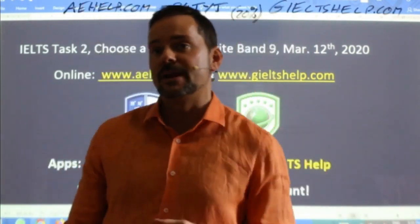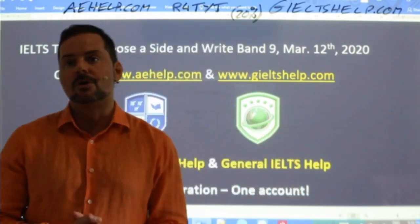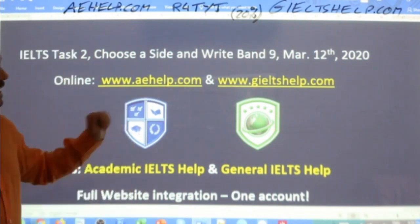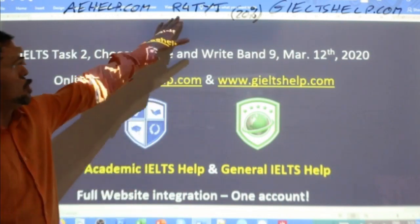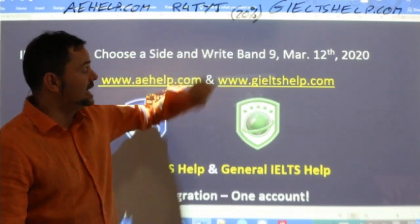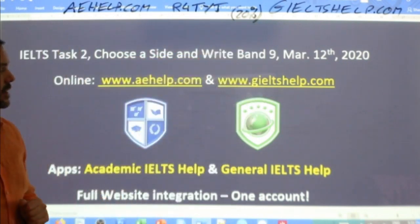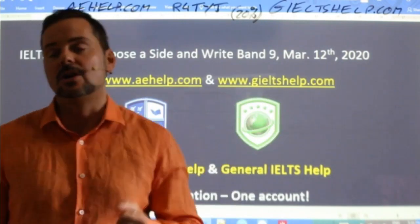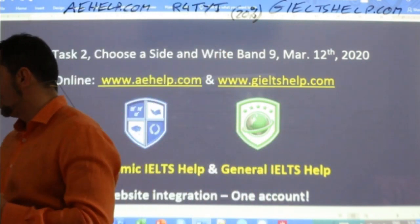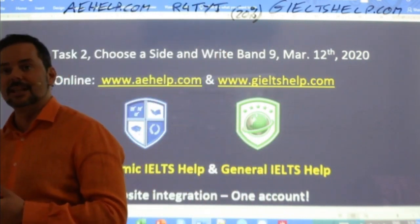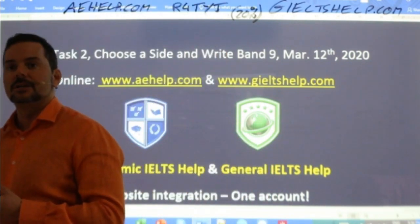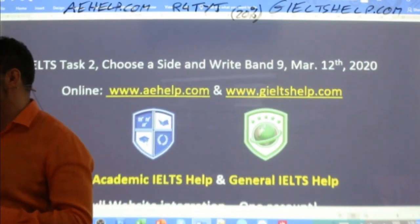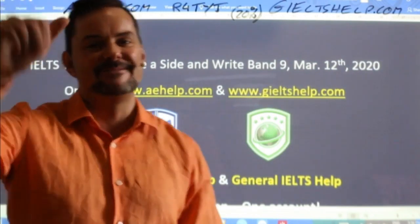Make sure to check us out at aehelp.com for academic IELTS. Use the code R4TYJ to get that 20% discount. And for general IELTS, check us out at gieltshelp.com. Lots and lots of help for you there. Make sure to use those websites daily and maximize your score. Much love to all of you from the heart of Europe, Budapest. Bye for now.